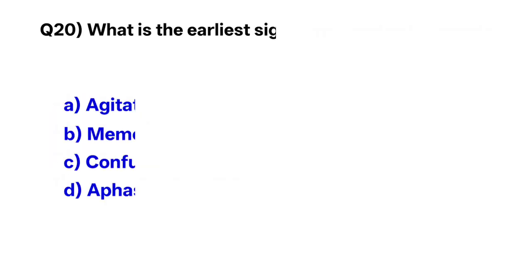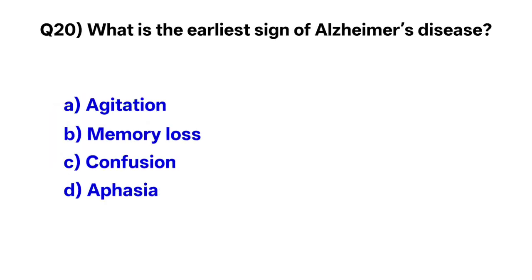Question number twenty: What is the earliest sign of Alzheimer's disease? The correct option is B, memory loss.